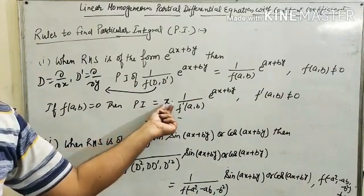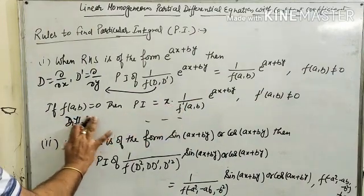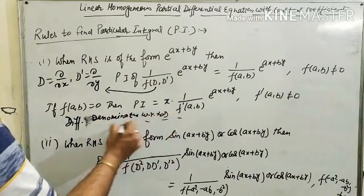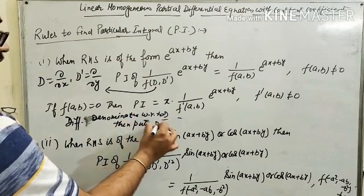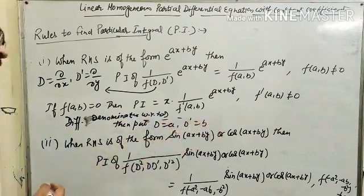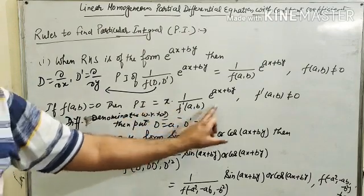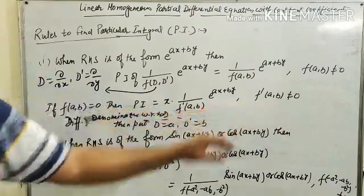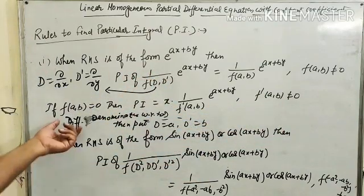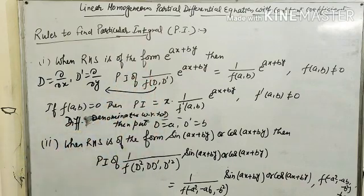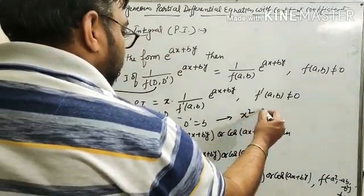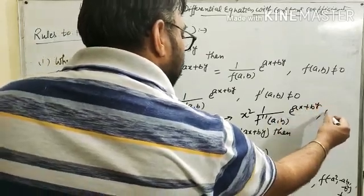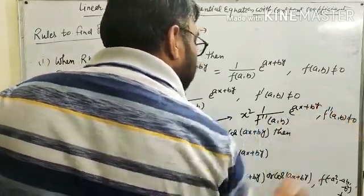If f(a, b) equals 0, then we have to multiply by x and differentiate the denominator with respect to D. Then put D equals a and D' equals b. That gives x into 1 upon f'(a, b) times e raised to power ax plus by, providing f'(a, b) is not equal to 0. If f'(a, b) is also equal to 0, then again differentiate the denominator with respect to D and multiply by x in the numerator.